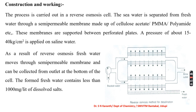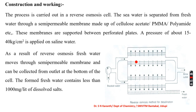Reverse osmosis is carried out using an osmosis cell. It consists of a large perforated semi-permeable membrane, usually made of cellulose acetate, polymethyl methacrylate, or polyamide membrane. These membranes are supported by perforated plates. A pressure of about 15 to 40 kg per centimeter square is applied on the saline water.